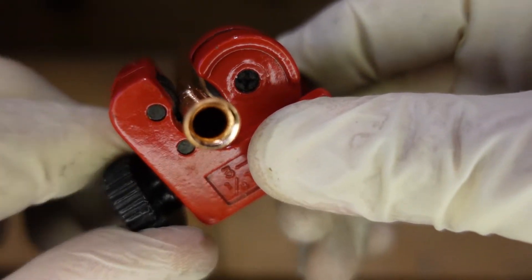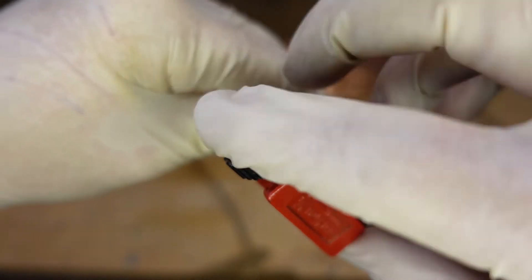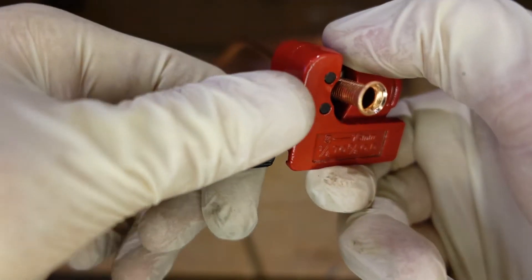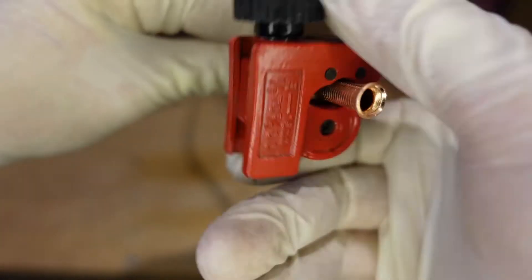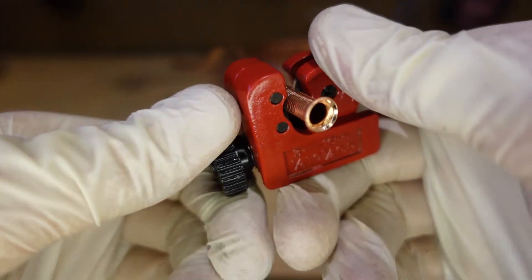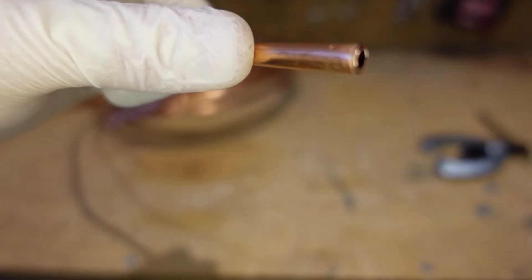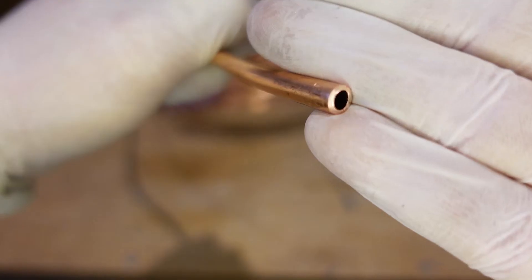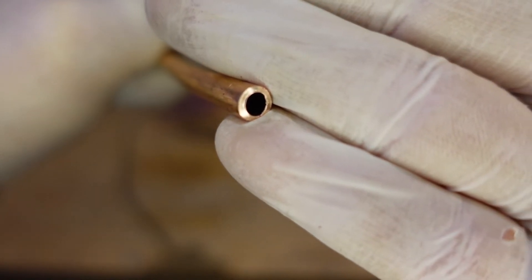We're going to tighten it up and start turning, just like this. Tighten it up a little bit more. Keep turning so it's actually cutting the tubing right now. Tighten it a little more and there we go. Just like that our tubing is cut and as you can see it is nice and flush at the end. So very handy tool.